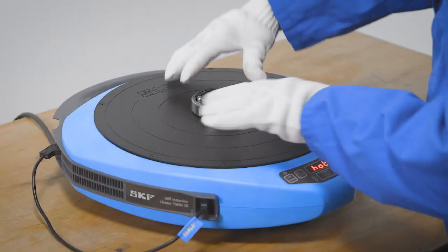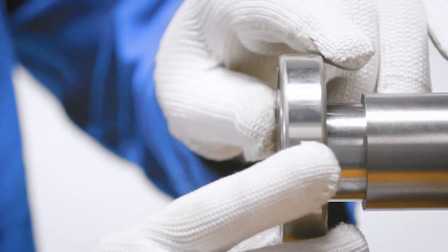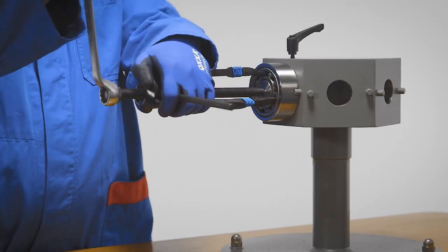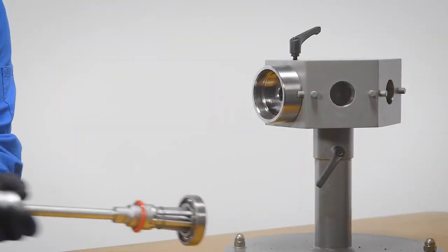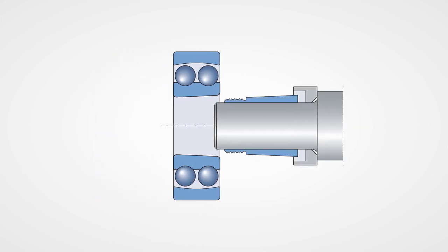The parallel bore types are mounted and dismounted with the same procedures as used for deep groove ball bearings with a parallel bore. This film concentrates on the tapered bore type because they are mounted and dismounted in a particular way.